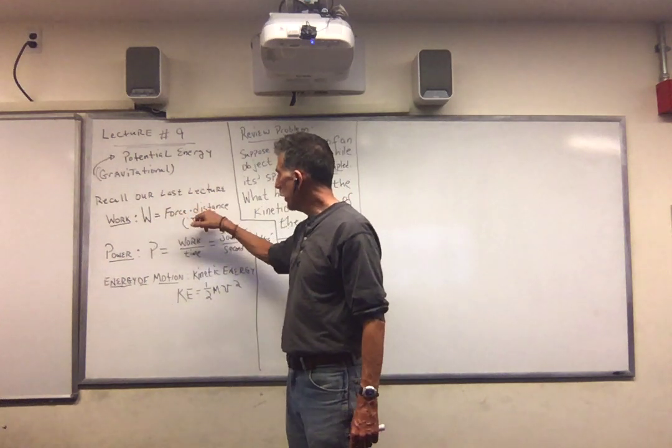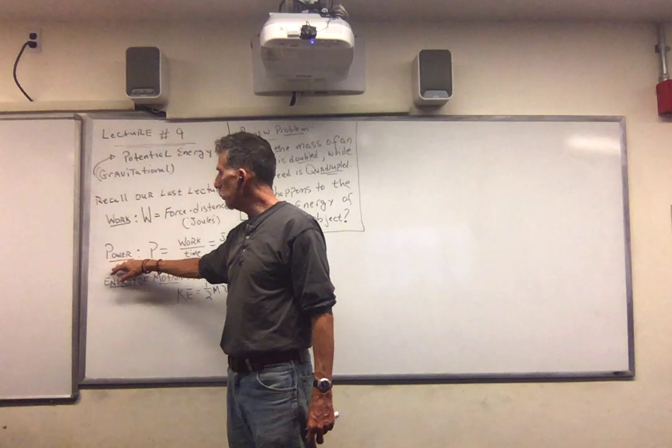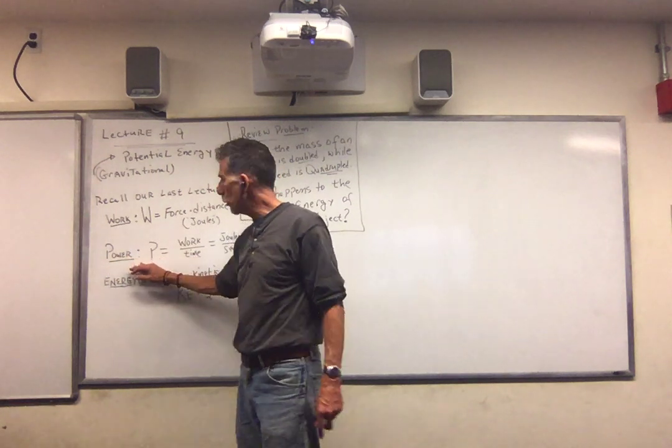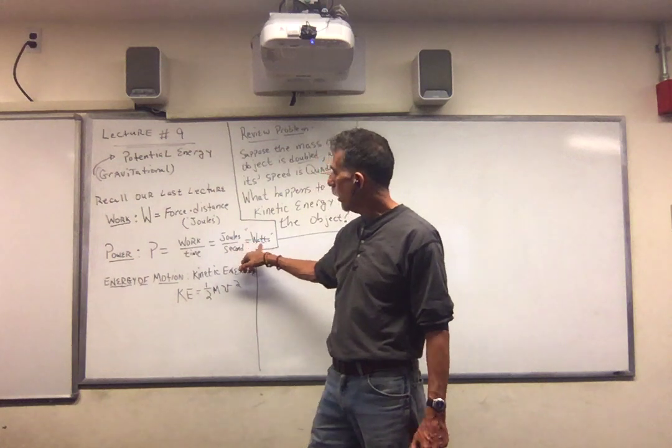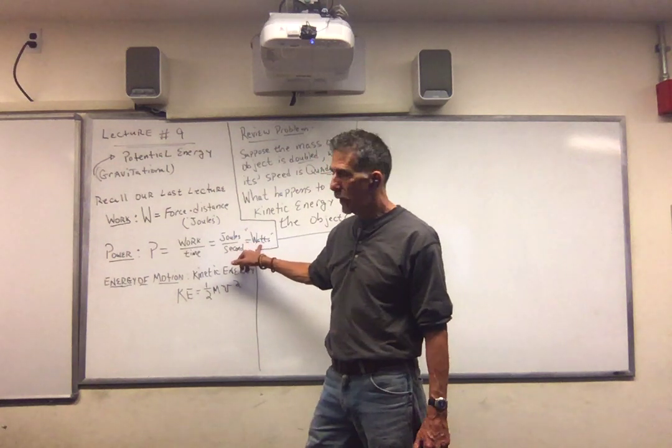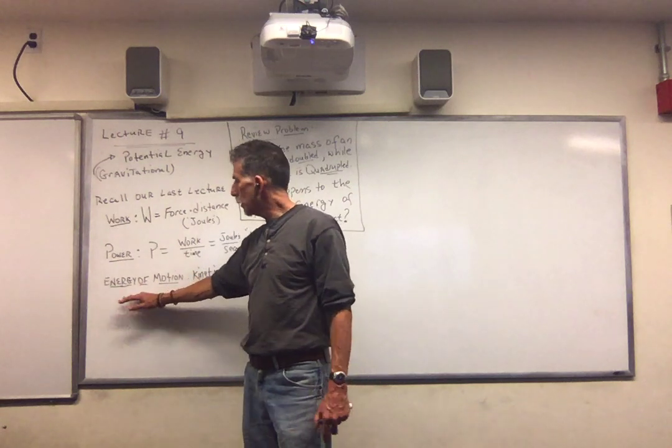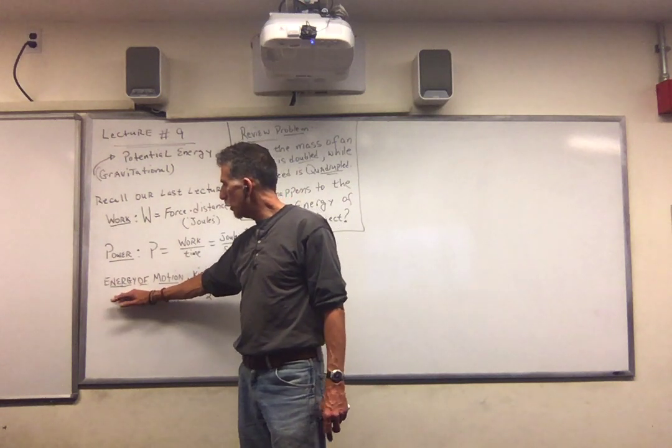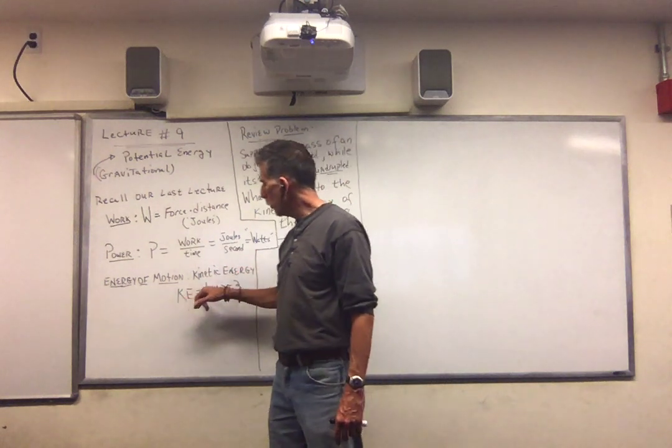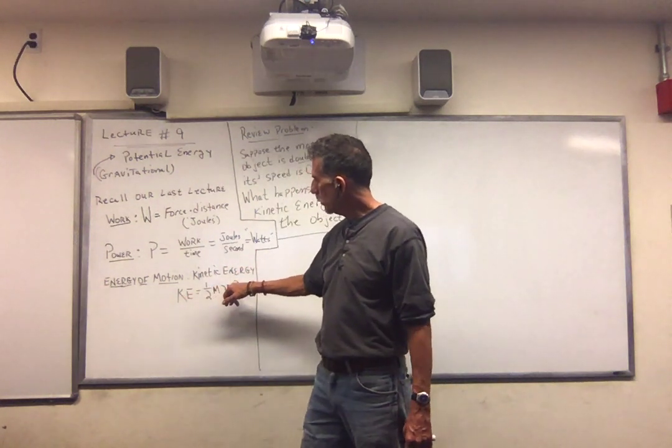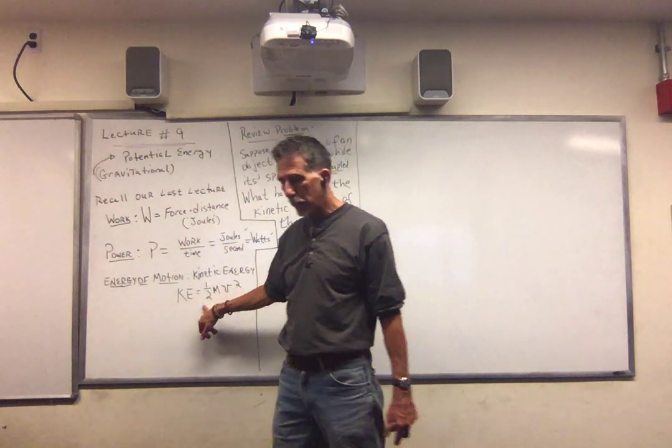We said that unit was joules. Then we defined power. Power was the rate of doing work, so it was work over time. Joules per second, the units were watts. And then we finally started talking about specific types of energy. Here we spoke about energy of motion, which we said was kinetic energy, and it's defined to be one half the mass times the velocity squared, or speed squared. Don't forget that factor of a half.